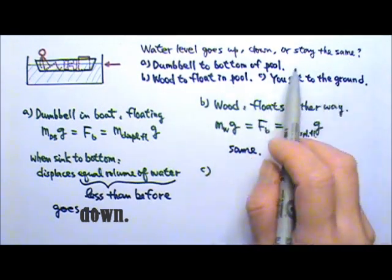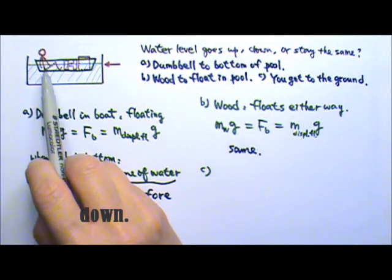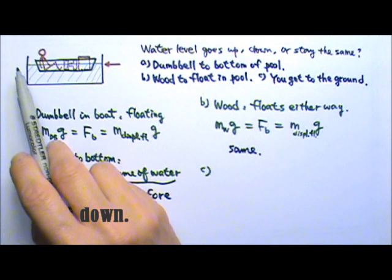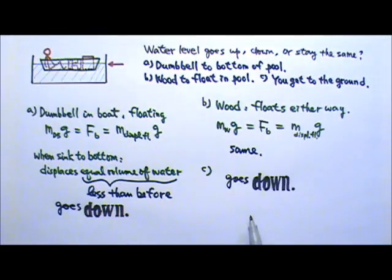For part C, you get to the ground. When you're in the boat, you would displace as much water as your own weight. But once you get out onto the ground, you would no longer displace any water. So of course, the water level is going to go down.